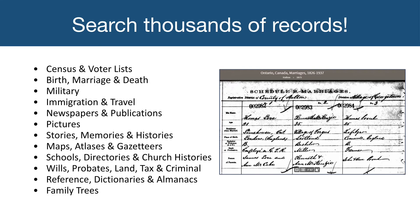Ancestry Library Edition is an online database that contains thousands of records of births, marriages, deaths, census information, immigration records and more for the United States, United Kingdom, Canada and many other countries. It is the same database as subscription services Ancestry.com and Ancestry.ca offer, except the Library Edition does not allow for personalization, such as being able to upload a family tree.